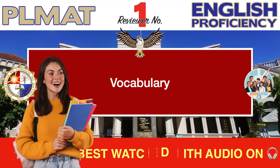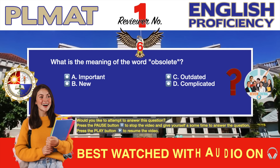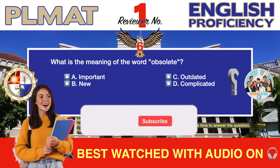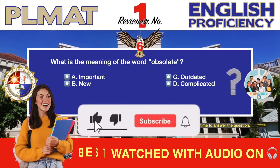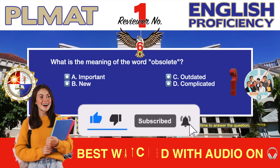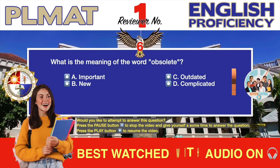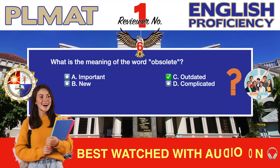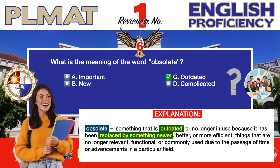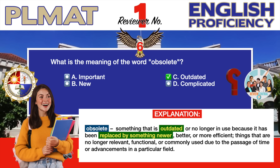Vocabulary. Question number six. What is the meaning of the word 'obsolete'? A. Important. B. New. C. Outdated. D. Complicated. The correct answer is C. The word 'obsolete' means something that is outdated or no longer in use because it has been replaced by something newer, better, or more efficient. It refers to things that are no longer relevant, functional, or commonly used due to the passage of time or advancements in a particular field. Certain words, practices, and devices can become obsolete over time.